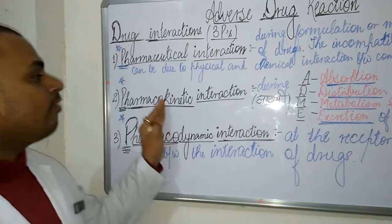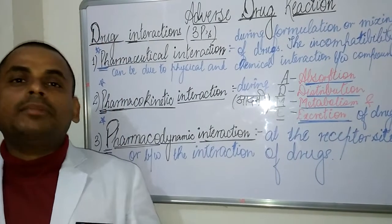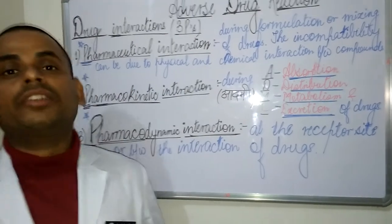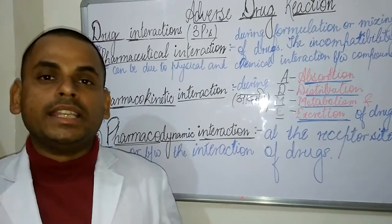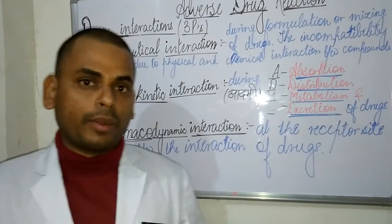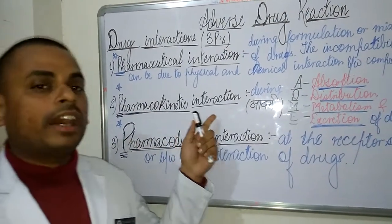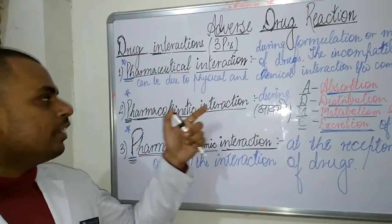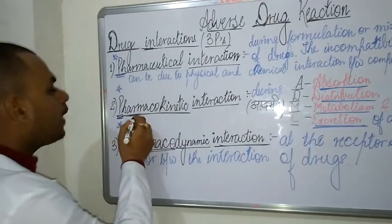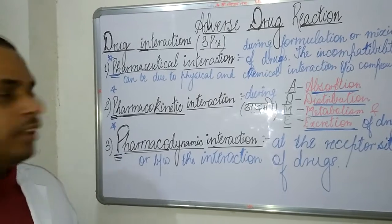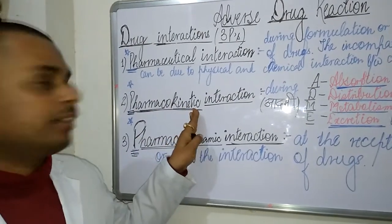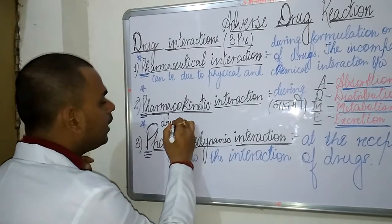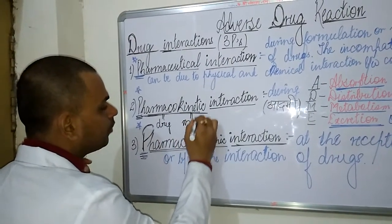Moving on to the second P — the second P refers to the pharmacokinetic interaction. In my previous video about adverse drug reactions, I discussed the mnemonic in alphabetical series A, B, C, D, E, and F. The word pharmacokinetic can be split into two words: 'pharma,' which refers to a drug, and 'kinetic,' which refers to motion or movement.